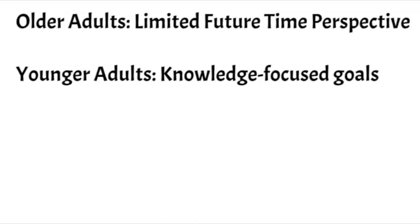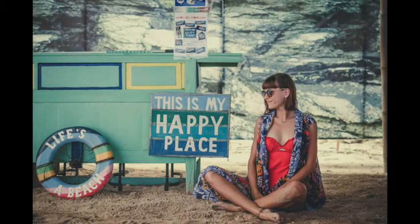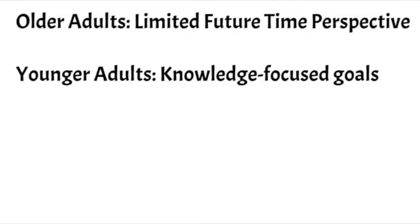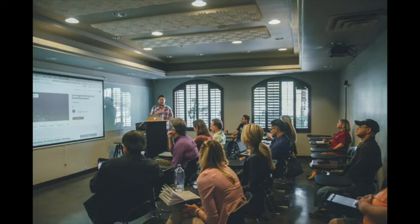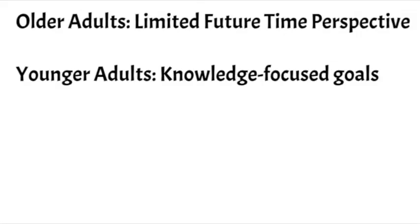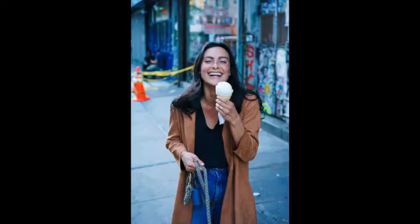What does that specifically mean? For older adults, they tend to focus more on emotionally salient goals — being happy and enjoying the moment. For younger adults, they tend to go more toward knowledge-based pursuits, trying to learn as much as they can and go into new situations, even though those might not be as enjoyable as, say, hanging out with a friend and getting ice cream.